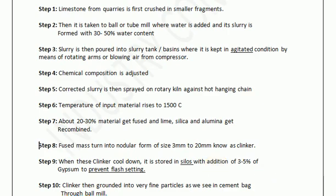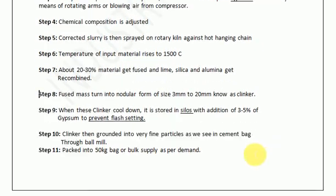Gypsum is added as a retarder to reduce the pace of chemical reactions when water is added. In step 10, since cement in a bag is always very fine and we never see clinker of 3 mm to 20 mm, the company uses machinery to break down this clinker into very fine particles through a ball mill. You should ask yourself: why can we not use clinker directly?